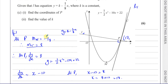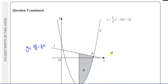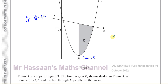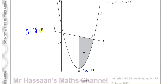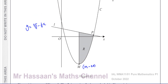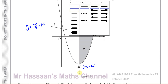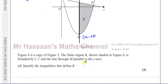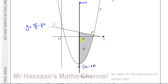For part D of question nine, we deal with inequalities. Figure 4 is a copy of figure 3, and the finite region R shown shaded is bounded by line L, the line through M parallel to the y-axis, and the curve C. This vertical line through M is x equals 10, since it passes through 10 on the x-axis.